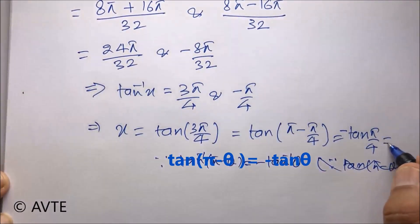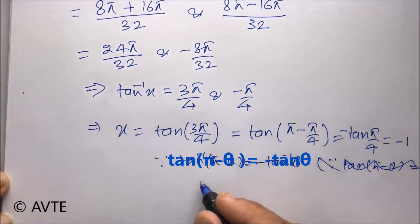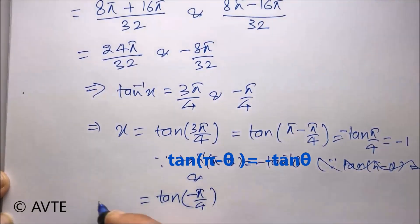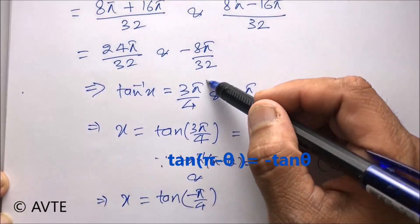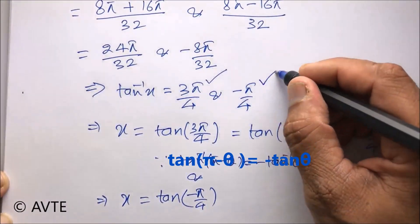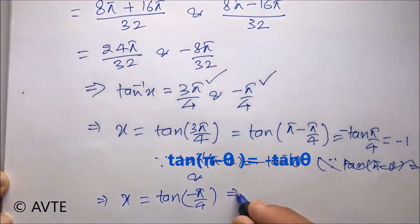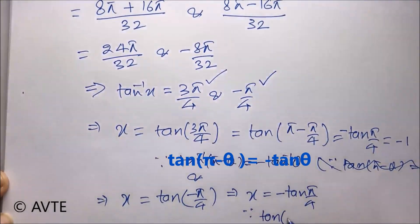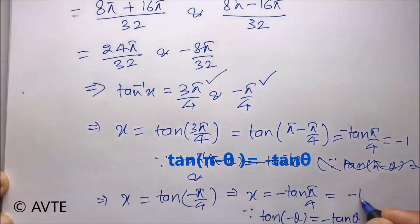So with this, the result is minus 1 for the first case. In the other case, we put tan inverse of x equal to minus pi divided by 4, giving x equal to minus tan of pi divided by 4, because tan of minus theta equals minus tan theta. Therefore x equals minus 1 again.